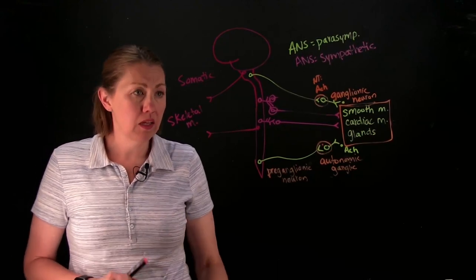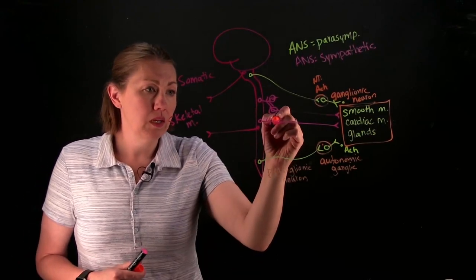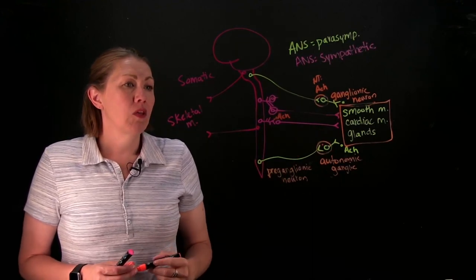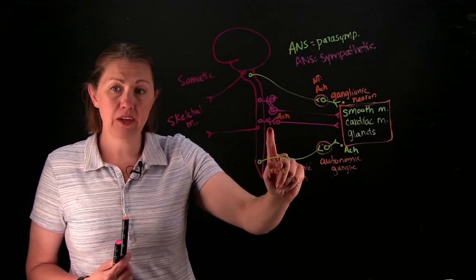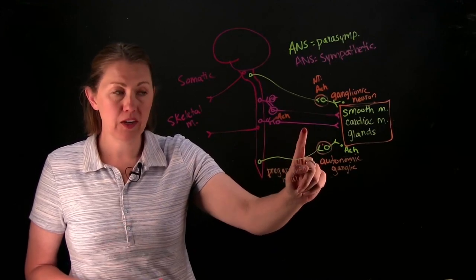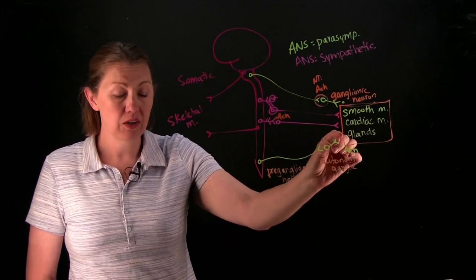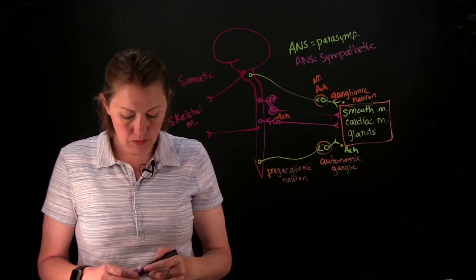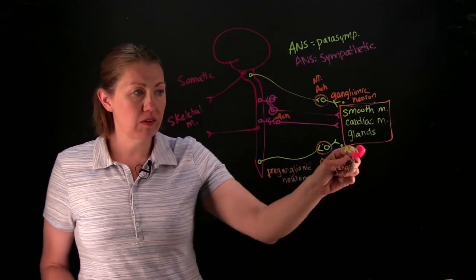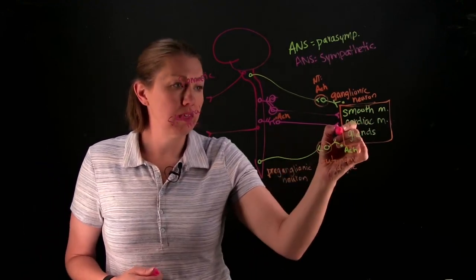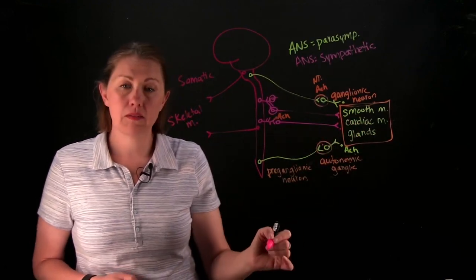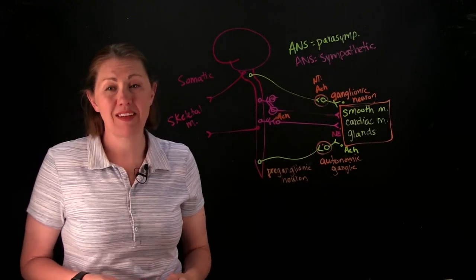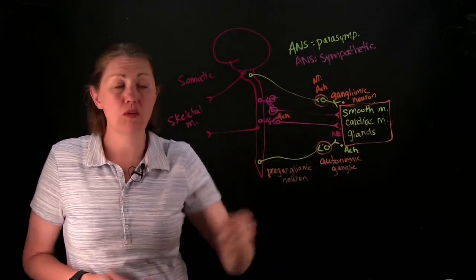You're still releasing acetylcholine at that first cell, so it's still ACh here. You're still called a preganglionic neuron, postganglionic neuron. But the difference is really here. It's the signal that you let out. So on this one, instead of releasing acetylcholine to these targets, you're going to release something that we call adrenaline or norepinephrine. Norepinephrine is going to go to those targets and they're going to do kind of the opposite of what acetylcholine causes.